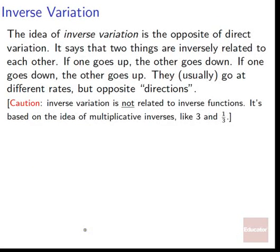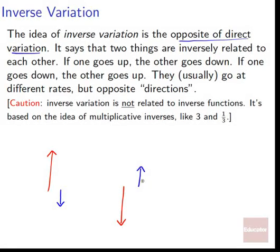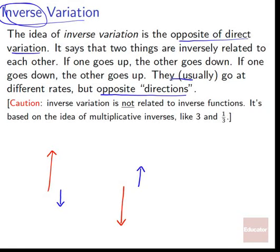Inverse variation is the opposite of direct variation. It says that two things are inversely related to each other, so if one goes up, the other one goes down; if one goes down, the other one goes up. They're usually going to go at different rates and they have different growths, but they're going in opposite directions. That's the key idea of inverse variation: if one grows, the other shrinks; if one shrinks, the other grows.